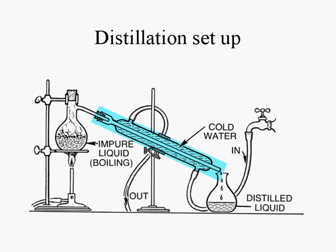The condenser is just a tube that is jacketed within a larger tube. Water flows through the outer tube to keep the inner tube cool. As the gas comes in contact with the cool tube, it condenses back to a liquid.